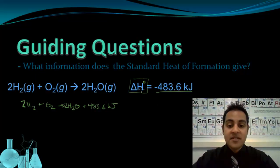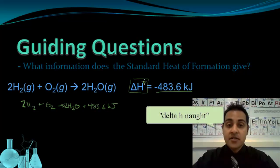This new symbol now means the standard heat of reaction as opposed to a regular heat of reaction. And we read this symbol as delta H naught. The superscript zero is read as naught.